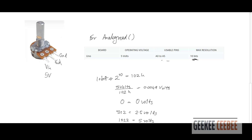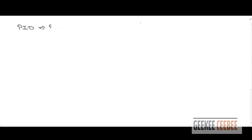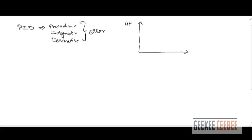Next, we'll go over the PID formulation. PID stands for proportional, integrator, and derivative of the error. What is error exactly? If you have a function U(t) over time representing the desired trajectory — in this case a step function — and this is our actual component, like a motor trying to follow that trajectory, it starts moving away from the desired line.